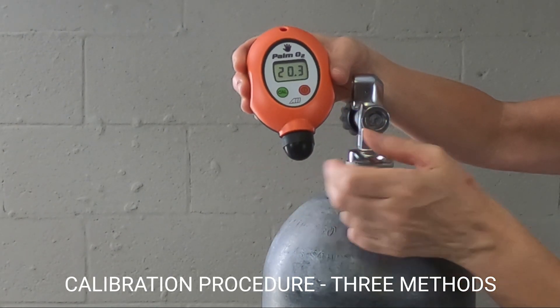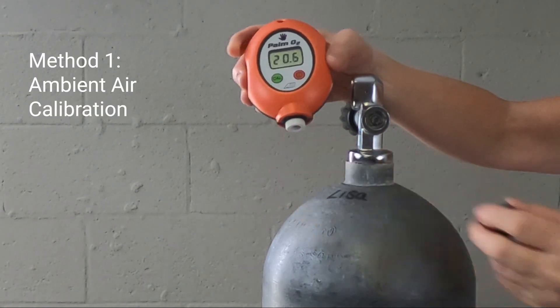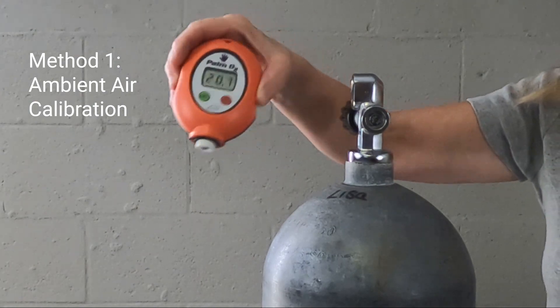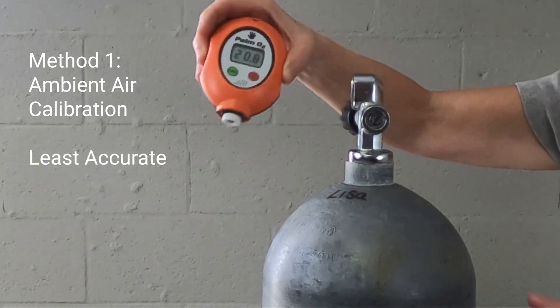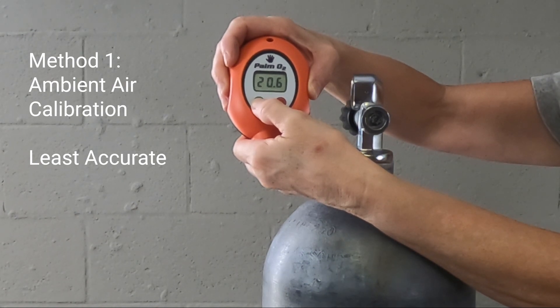The POM-D analyzer can be calibrated using one of three methods. The first method is calibrating the POM-D with still air. This method is the least accurate since the analyzer is always on a flowing gas.